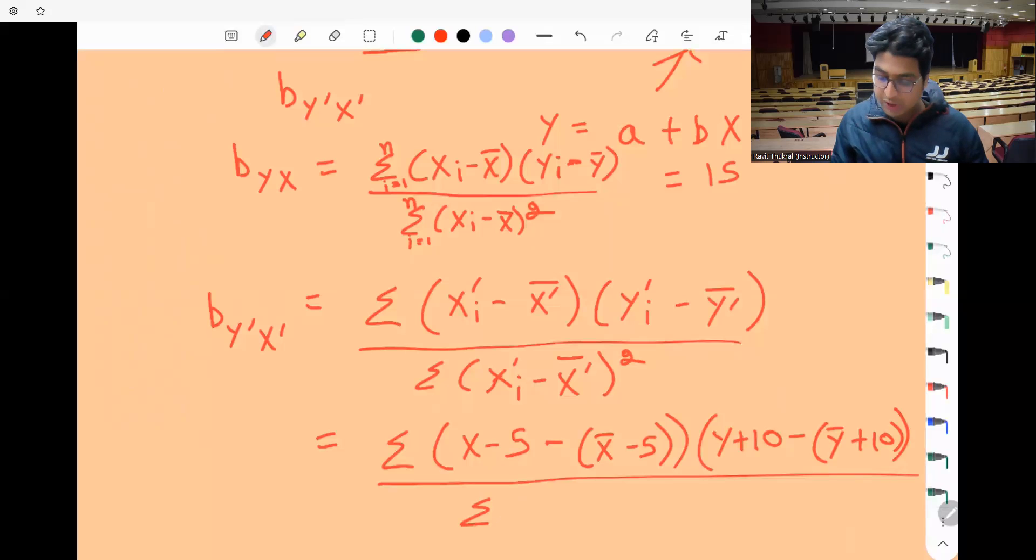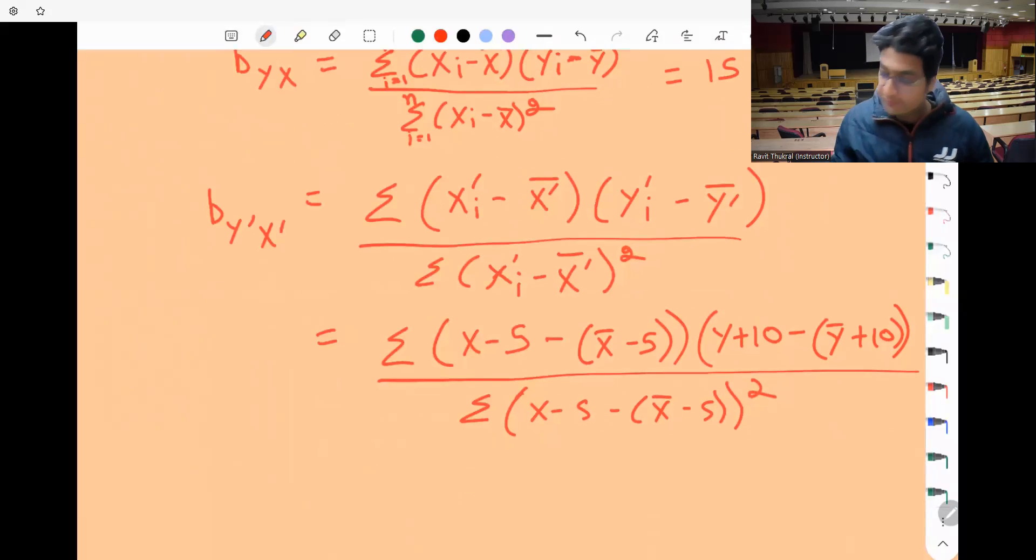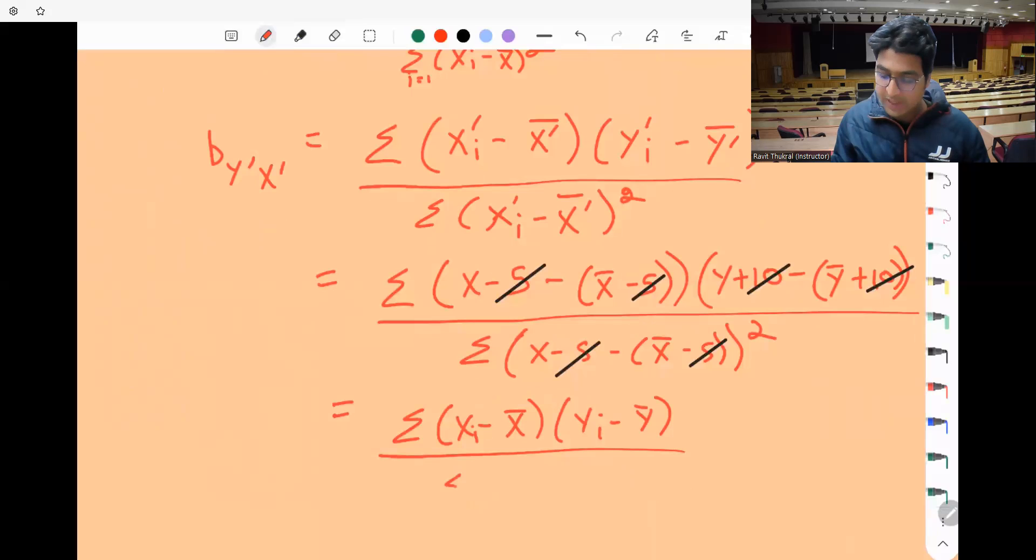Divided by summation (X-5 - X̄-5)². Obviously, the 5 gets cancelled out, the 10 gets cancelled out, and you get back summation (Xi - X̄)(Yi - Ȳ) upon summation (Xi - X̄)², which is bYX only, which was 15.